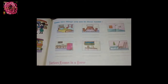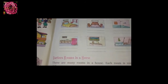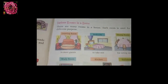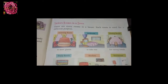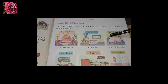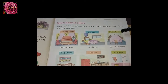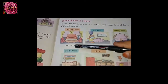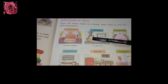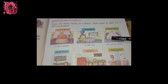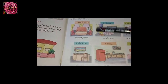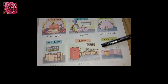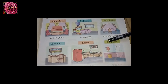There are many rooms in a house, and each room is used for a different purpose. This is the drawing room, where guests come to meet. This is the bedroom, where we rest. This is the dining room, where we eat meals. This is the study room, where we study. This is the kitchen, where food is cooked. And this is the bathroom, where we take a shower.